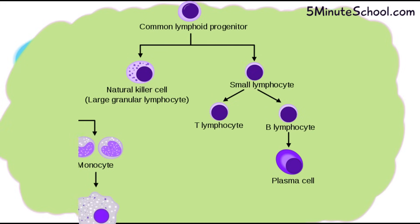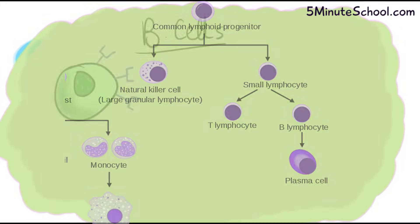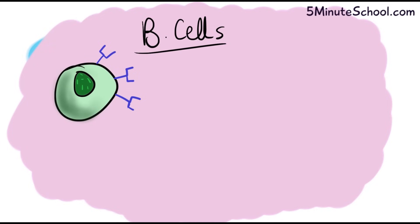Through differentiation processes, this hematopoietic stem cell eventually forms B cells and T cells. Let's talk about B cells first. The main function of B cells is the recognition of antigens. After being made in the bone marrow, they travel via the bloodstream to organs like the spleen, or they're located in lymph nodes, and this is usually where they're concentrated in the body.